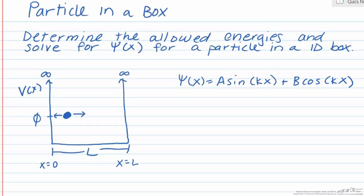But we need to take a look at our boundary conditions. We know that the particle cannot be located at the walls of our box or outside of the box, and so we know that our wave function at x equals 0 and x equals L has to be equal to 0.